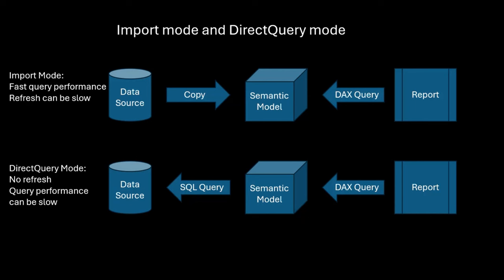You had two choices: import mode and direct query mode. Import mode involved taking the data from the relational serving layer and copying it into Power BI's own in-memory column store database engine, the VertiPaq engine. That was great because it gave you the fastest query performance—everything worked super fast—and generally this was the default choice. The problem is that you had to take all of the data from your relational database and copy it into Power BI's in-memory column store, which meant that every time the data changed, you had to refresh your semantic model, which could take quite a long time.